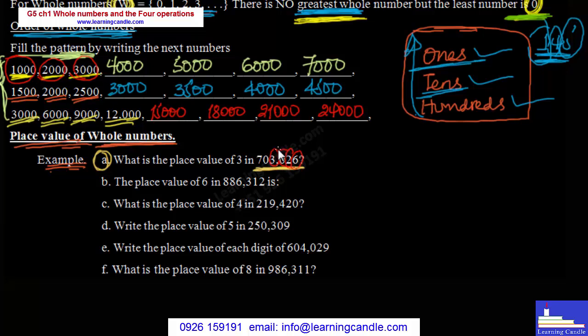What is the place value of 3 in this number? It is thousands. This is thousands. What is the place value of 3 in this number? It is thousands.